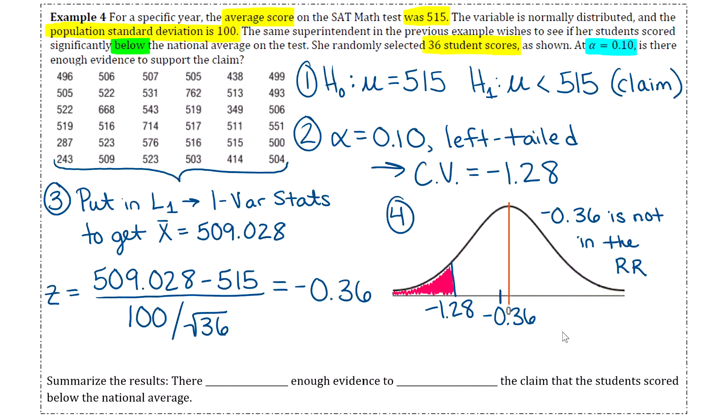Okay, so since it is not in the rejection region, then that tells us that our decision is going to be that we do not reject the null hypothesis. So do not reject the null. And then step five, we're just going to summarize our results using that summary table. So you'll identify that the claim is in the alternative. And then we said that we do not reject the null. So that means that there is not enough evidence to support the claim that the students scored below the national average.